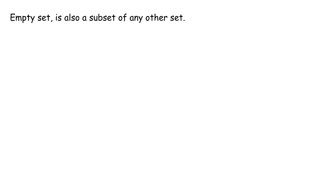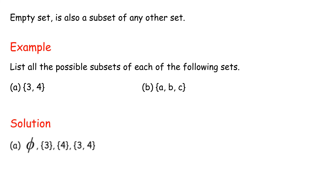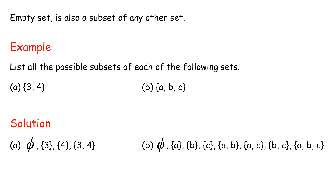The Empty Set is also a subset of any other set. Example: list all the possible subsets of each of the following sets. A: {3, 4}. B: {A, B, C}. Solution A: {}, {3}, {4}, {3, 4}. Solution B: {}, {A}, {B}, {C}, {A, B}, {A, C}, {B, C}, {A, B, C}.